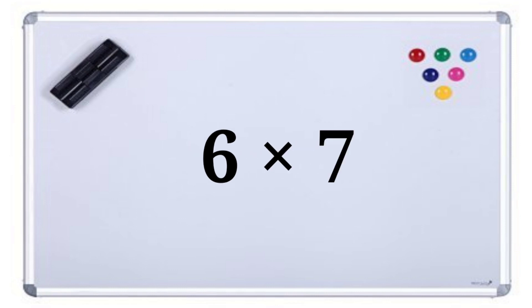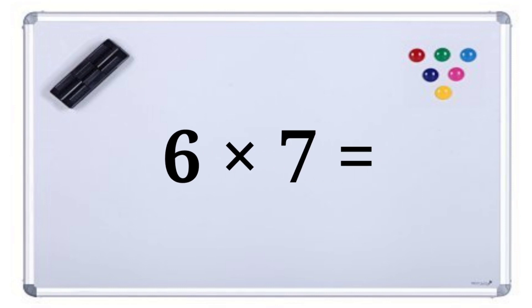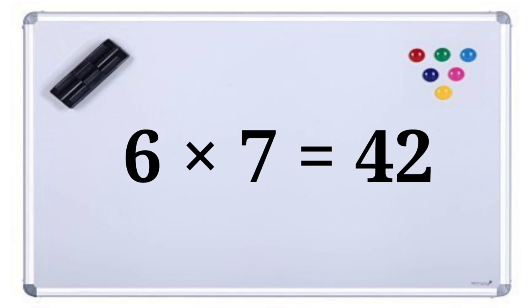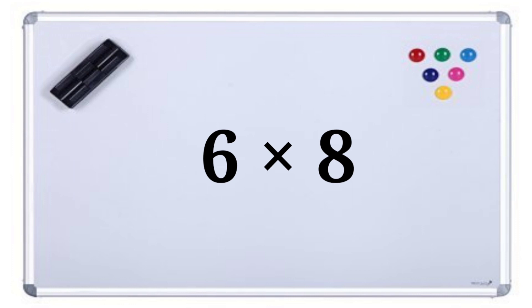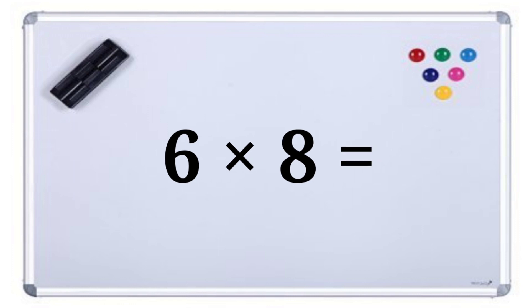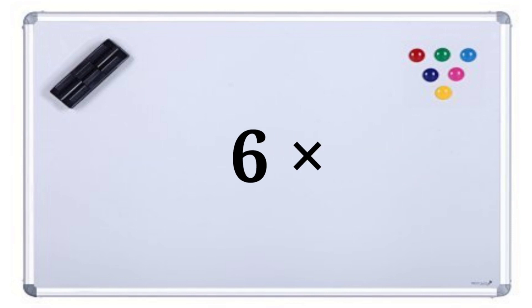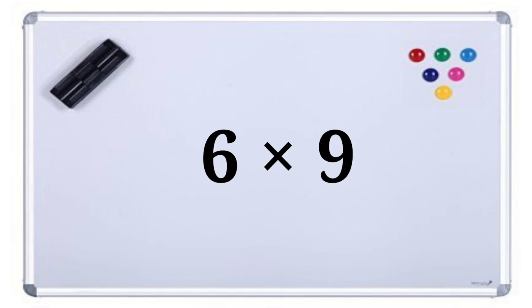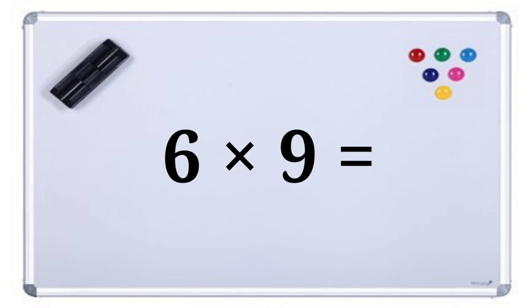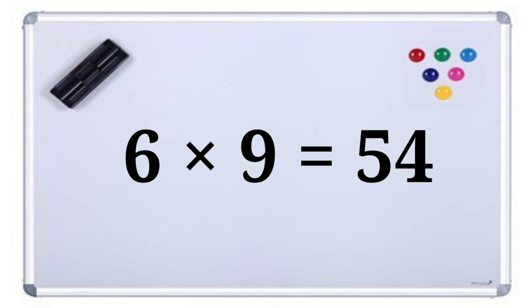6 sevens are 42. 6 eights are 48. 6 nines are 54.